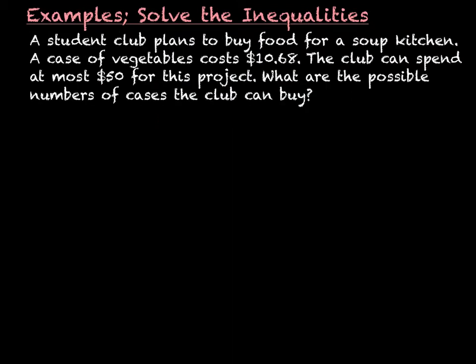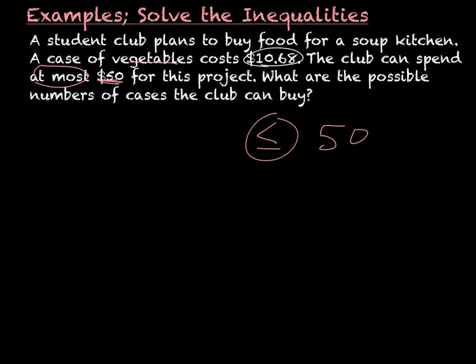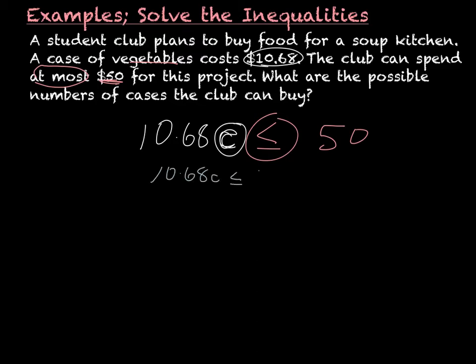For this next example, a student club plans to buy food for a soup kitchen. A case of vegetables costs ten dollars and sixty-eight cents. The club can spend at most fifty dollars for the project. What are the possible numbers of cases the club could buy? They will spend no more than fifty dollars, so it has to be less than or equal to fifty dollars. Each case is ten dollars and sixty-eight cents, so ten sixty-eight for every case they buy.